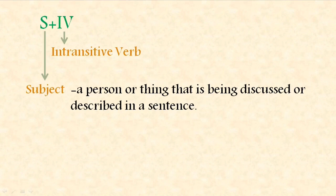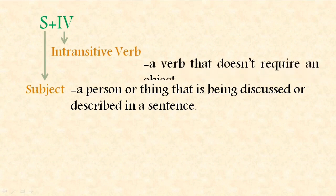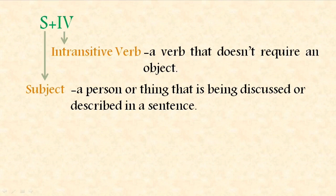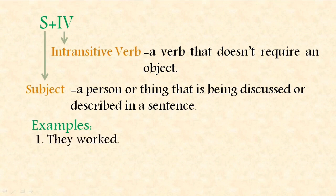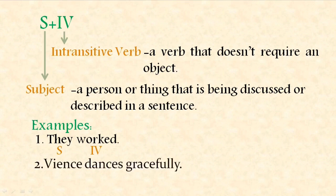The first one is SIV, or subject plus intransitive verb. The subject is a person or thing that is being discussed or described in a sentence, and it is a noun or a pronoun. An intransitive verb is a verb that doesn't require an object. For example: 'They worked' — the subject is 'they' and the intransitive verb is 'worked.' 'Viens dances gracefully' — 'Viens' is the subject, 'dances' is the intransitive verb. These sentences do not have an object.